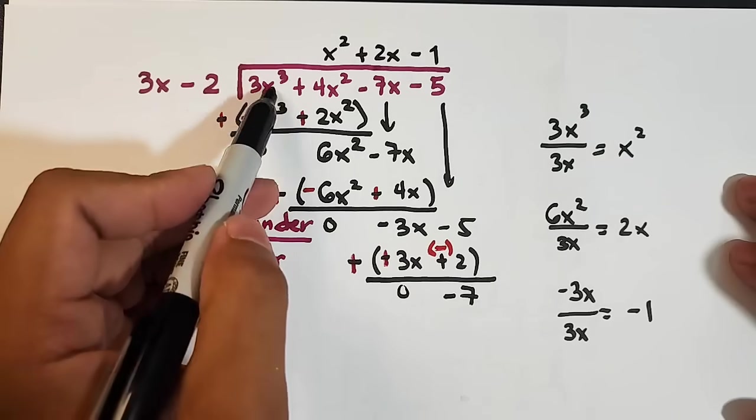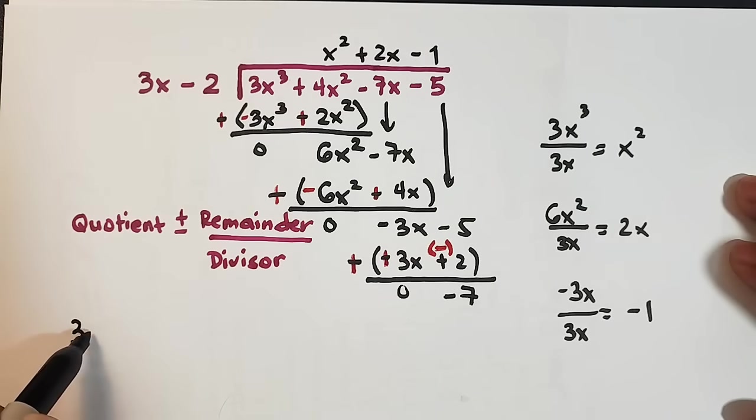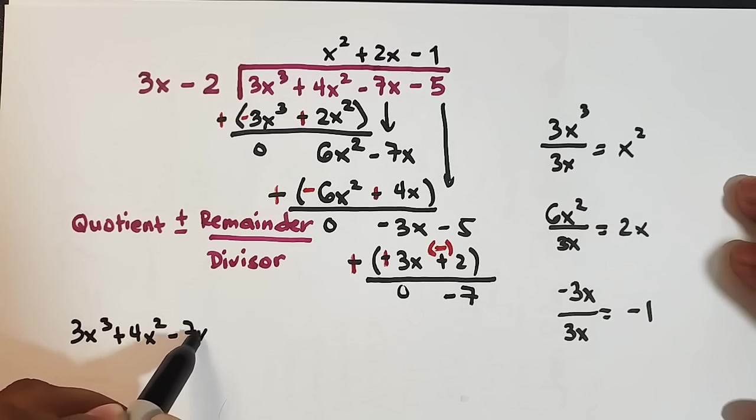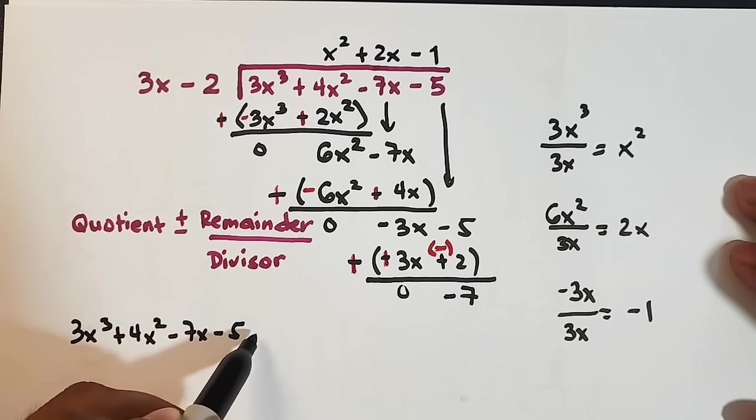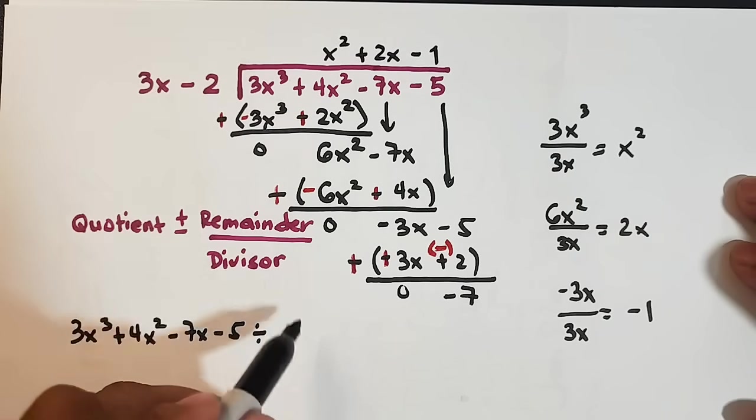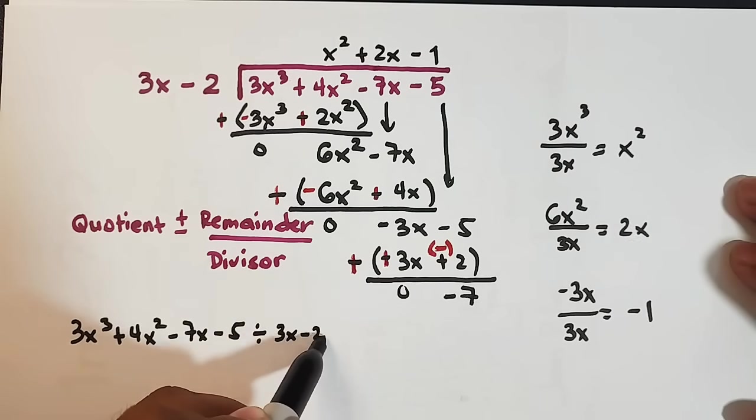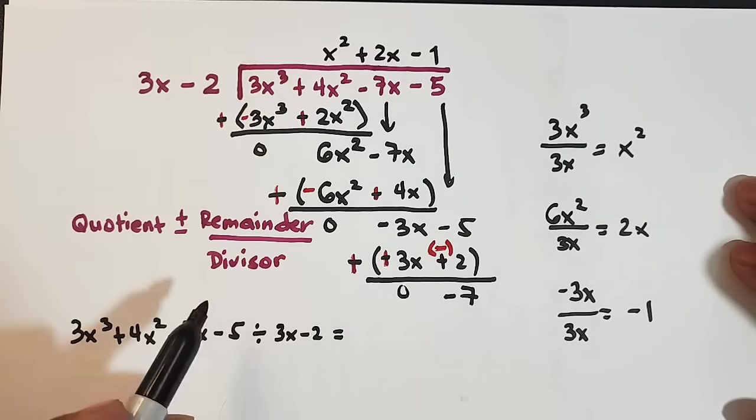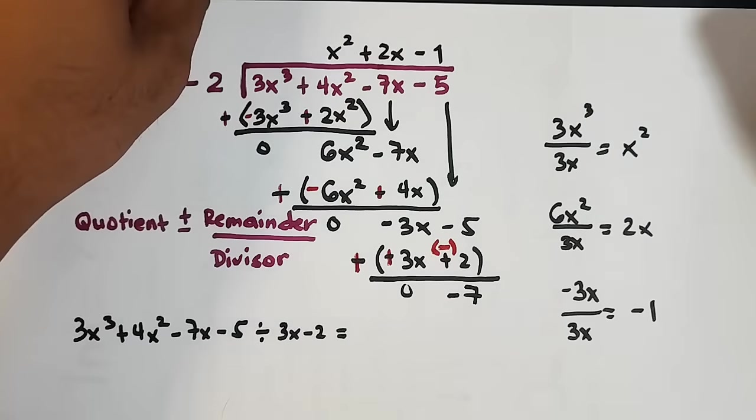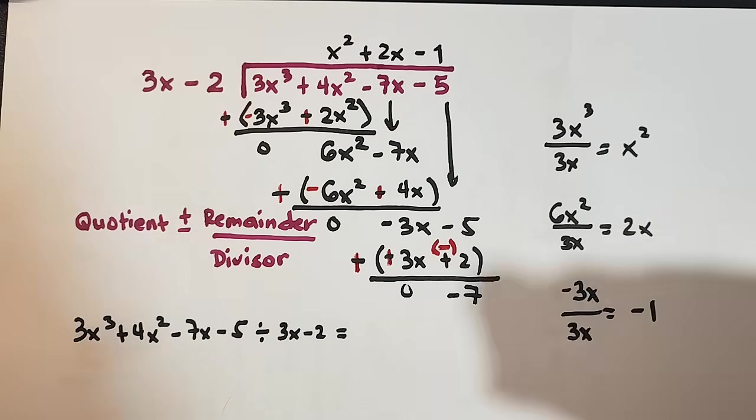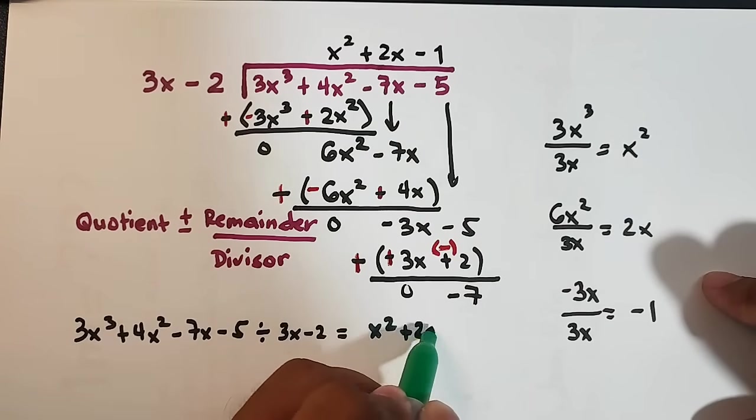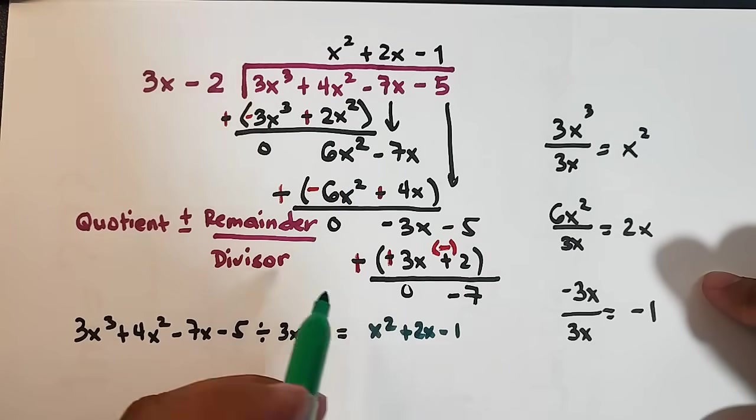Copy our divisor. 3x cube plus 4x square minus 7x minus 5 divided by 3x minus 2 is equal to. This is it. Follow this. Copy the quotient. Our quotient is using another color. x square plus 2x. Because maybe they're looking for this minus 1.